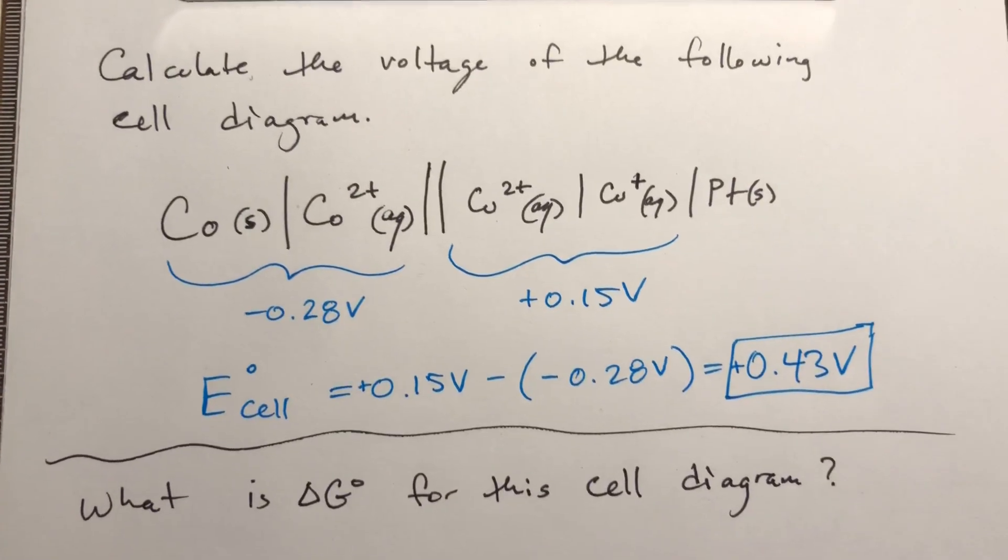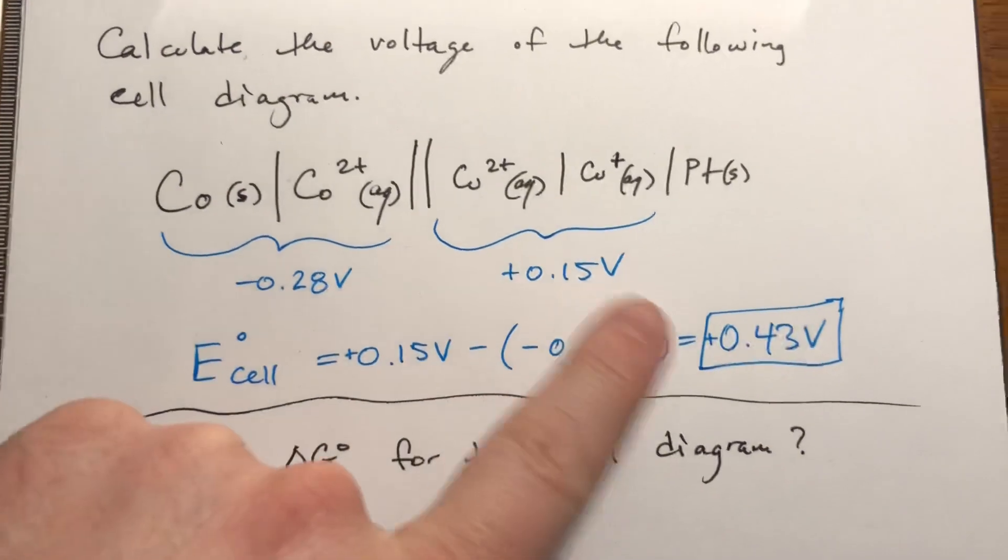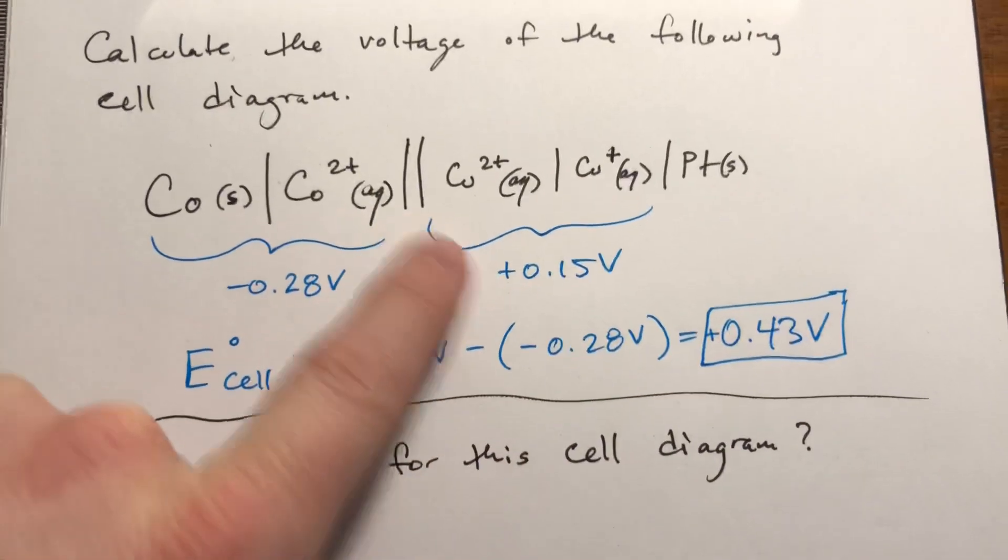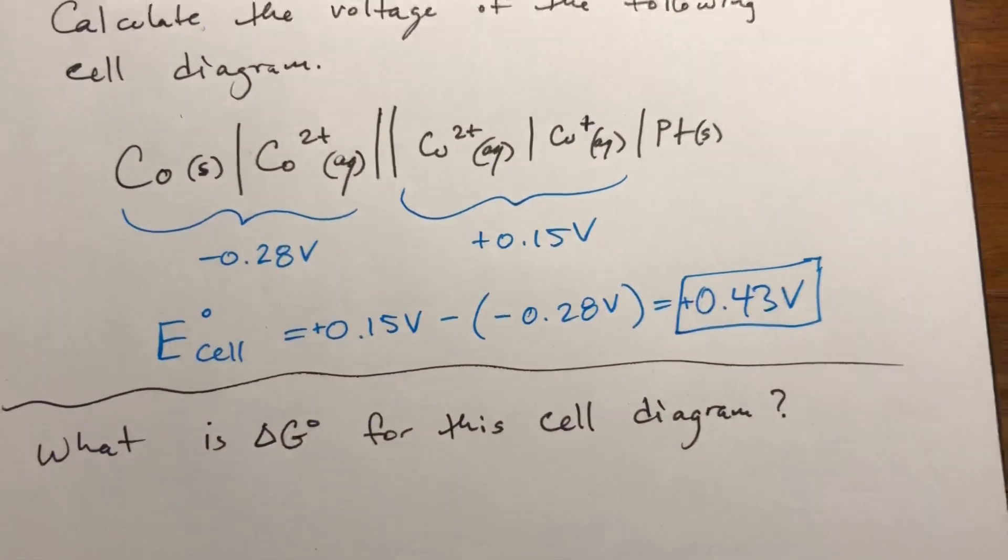In the previous problem we calculated the cell potential, the voltage, for this. We got a positive 0.43 volts.